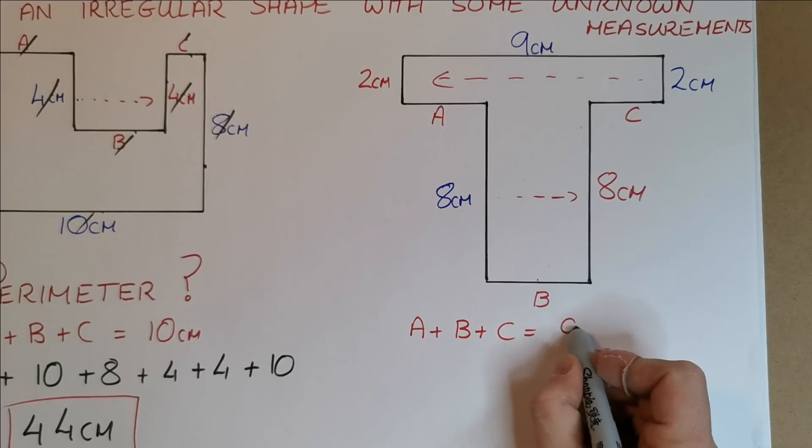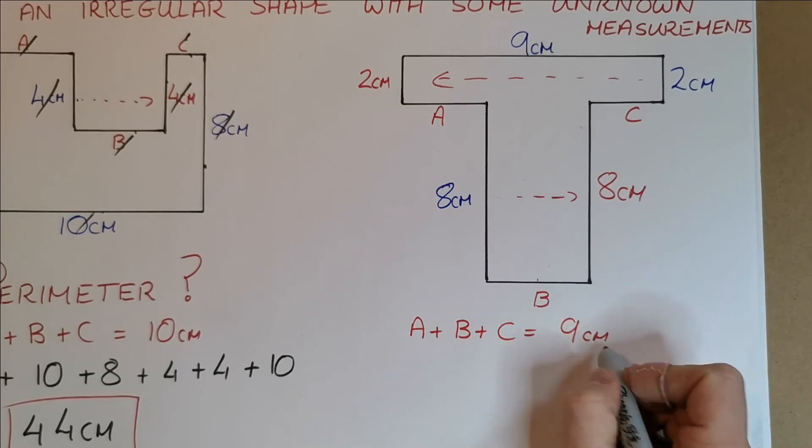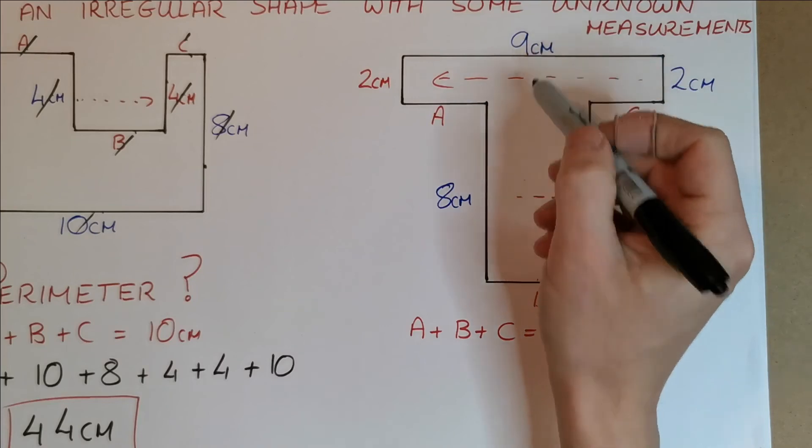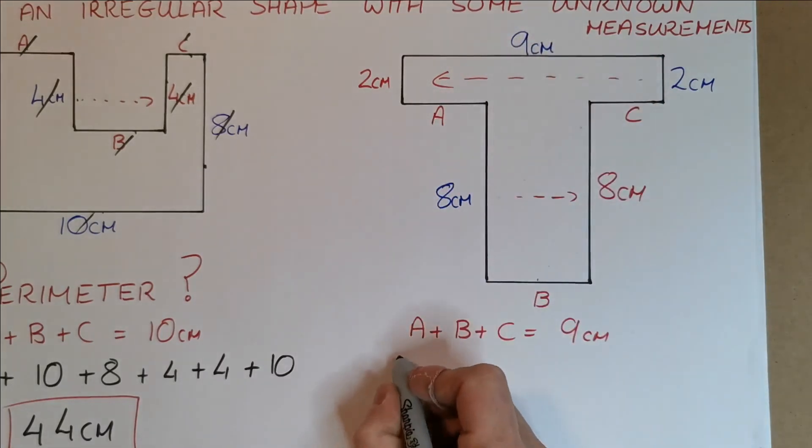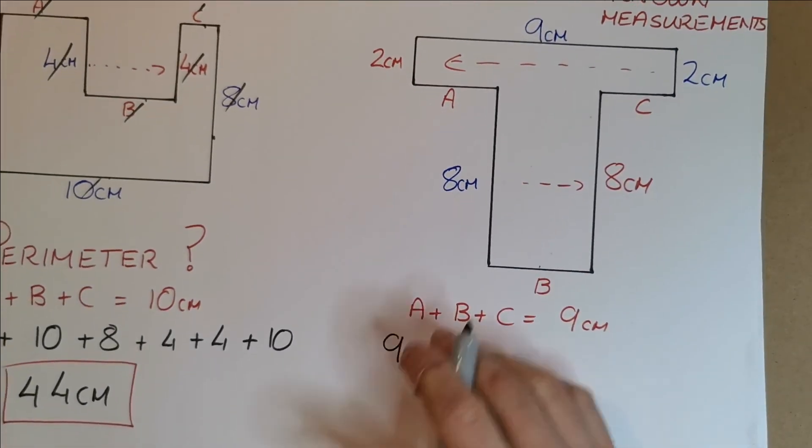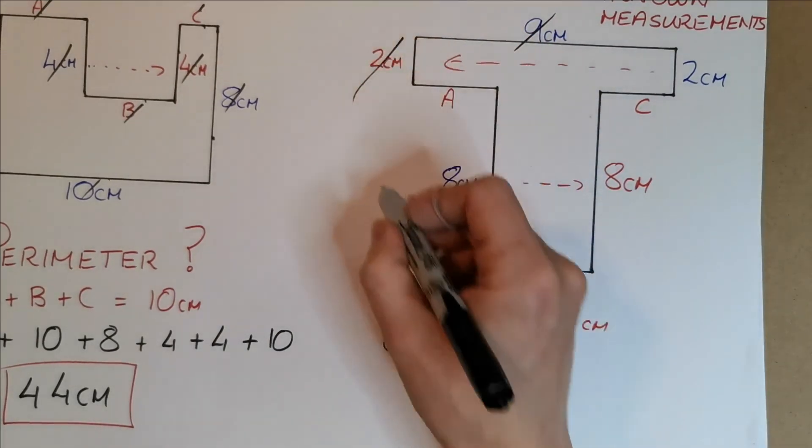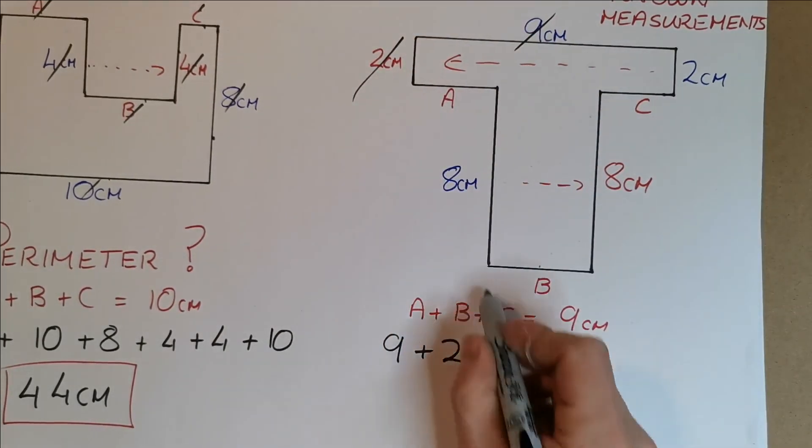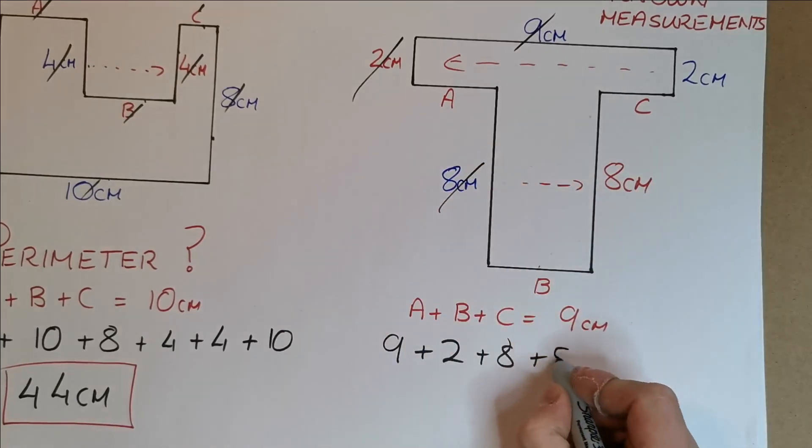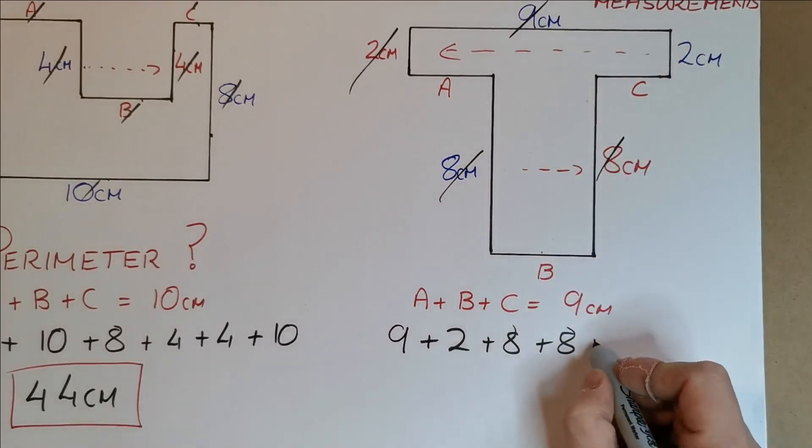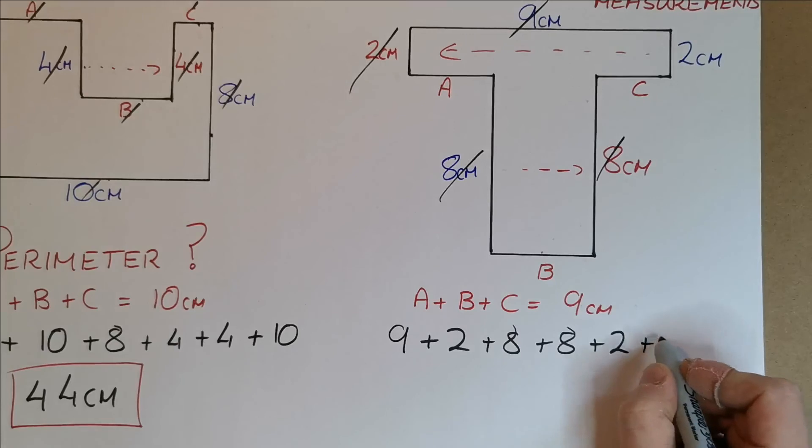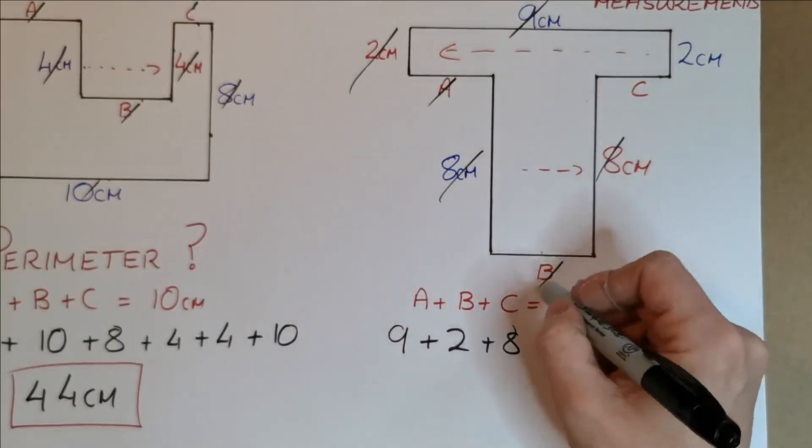So adding all my lengths that I know together, so I have 9, plus the 2, plus the 8, plus the other 8, plus the other 2, plus then my A, B, and C.